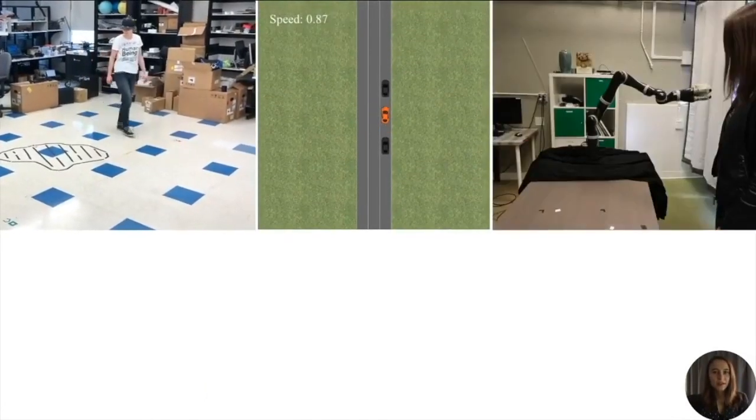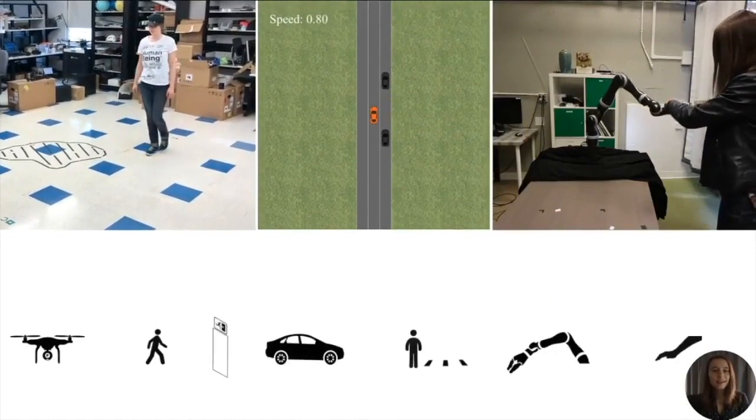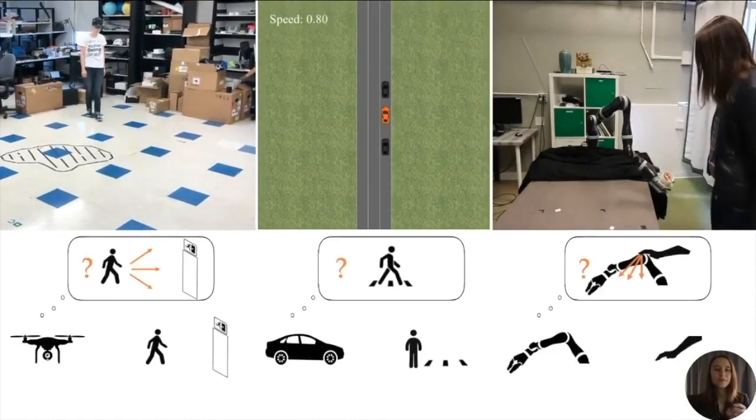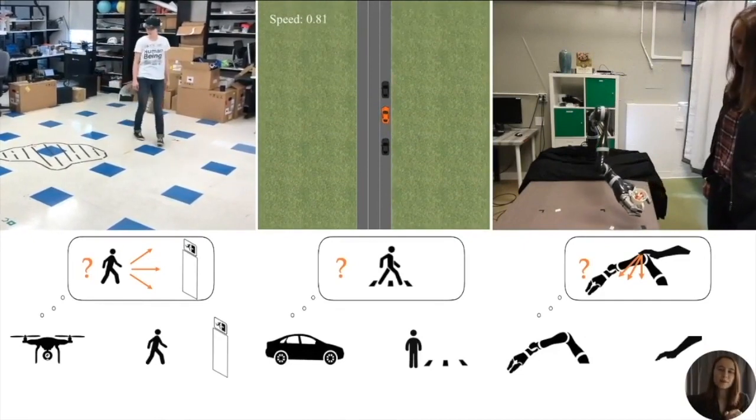Whether it's quadrotors, autonomous vehicles, or manipulation, when robots interact with humans, they need models of human behavior for both inferring human goals and preferences and predicting what people will do.